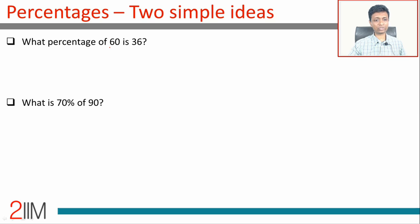What percentage of 60 is 36? Out of 60 you have 36. What is this as a percentage? What would this be out of 100? This is 36 by 60 into 100, which is 6 by 10 into 100, or 60 percentage.